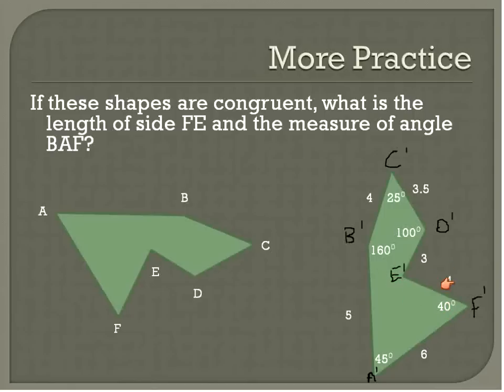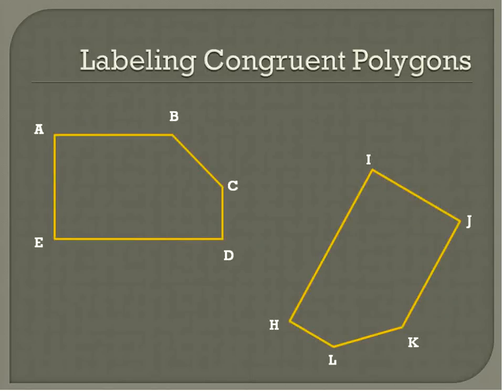And if we're labeling them the same way, then we should be able to find the corresponding side length pretty quickly of 4. And also our angle measurement of B, A, F, which would be B, A, F, 45 degrees. There's B, A, F, and there would be B, A, F, 45 degrees. So there's a little bit of practice using those congruent polygons.